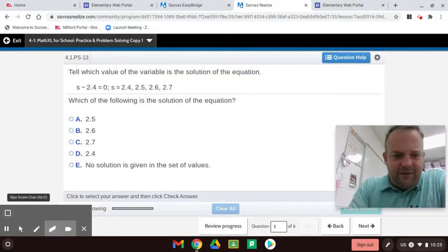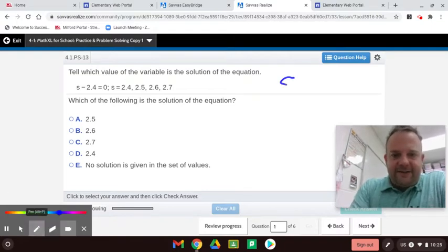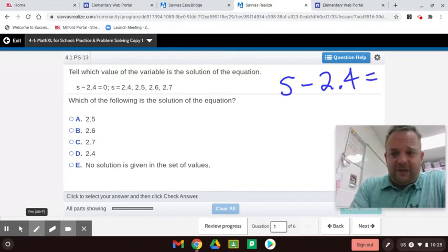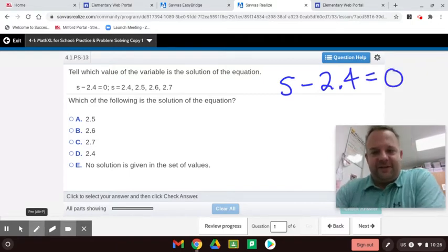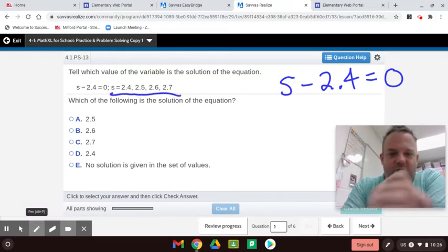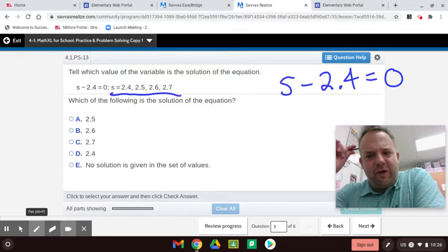An equation are things like this: S minus 2.4 equals 0. So this is an equation, and we're going to test out these values to see what would make this true. So what minus 2.4 would equal 0?